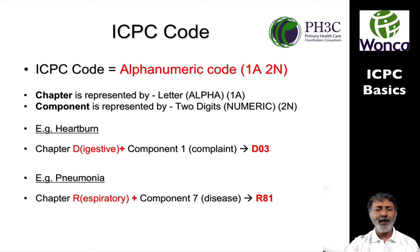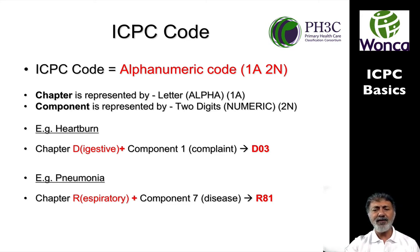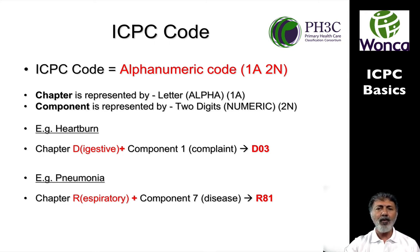Then there's an example of pneumonia. Again, it's part of chapter R for respiratory, and it is a disease, so you look at component seven and find it under 81. So the code for pneumonia would be R81, and that's how you code.